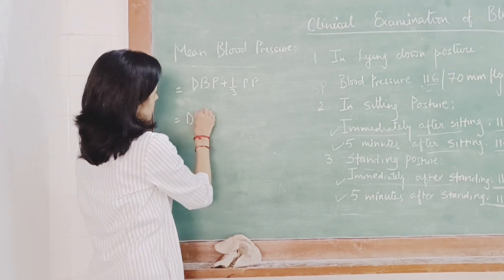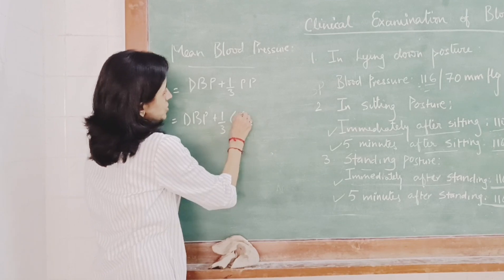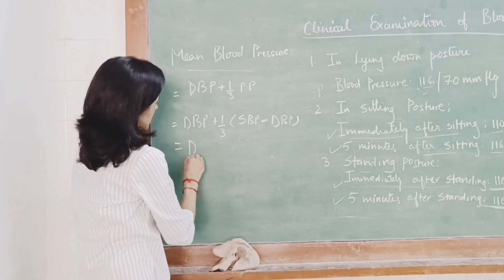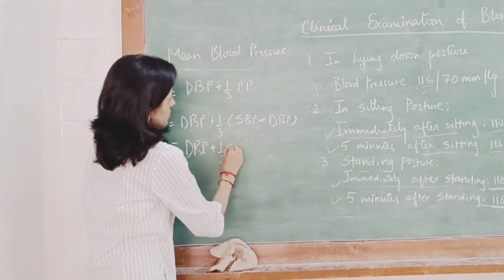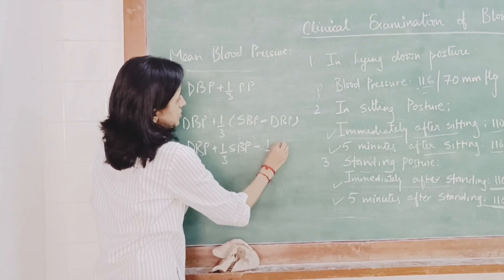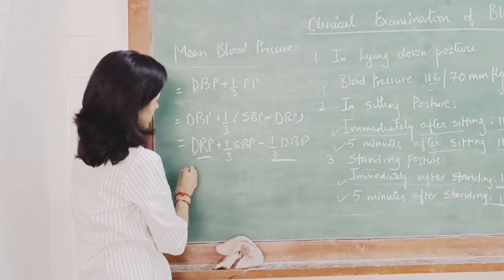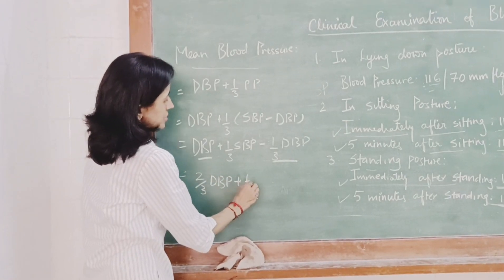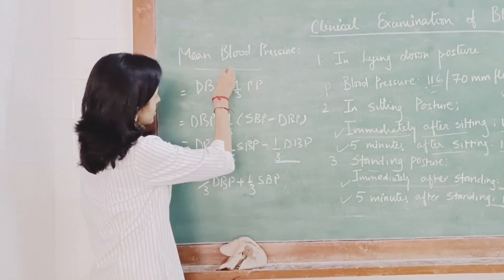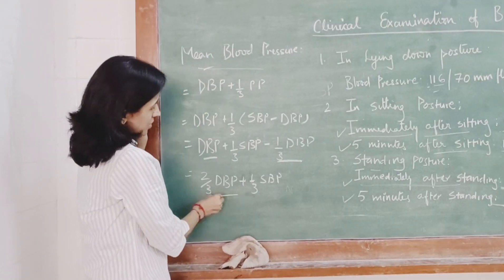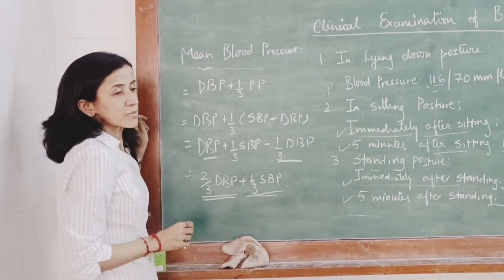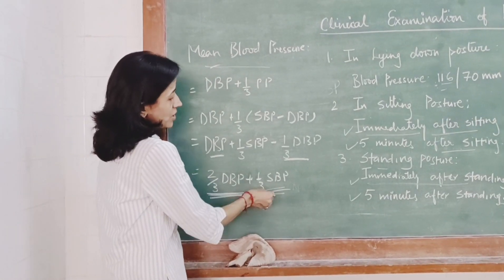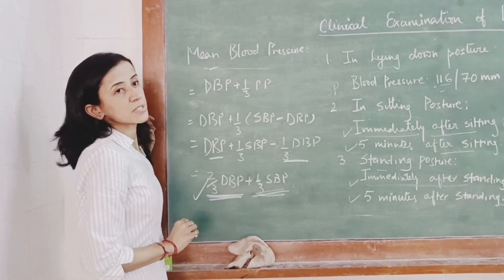Let us derive the mean blood pressure formula. Diastolic blood pressure plus one-third of pulse pressure equals diastolic blood pressure plus one-third of (systolic blood pressure minus diastolic blood pressure). Expanding gives one-third systolic minus one-third diastolic, which simplifies to two-thirds diastolic blood pressure plus one-third systolic blood pressure. This is the final formula for mean blood pressure, and it is weighted this way because the duration of diastole is greater than systole.